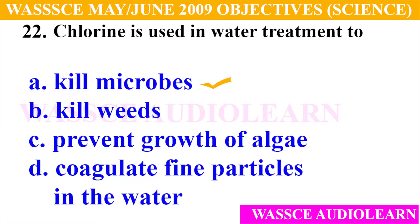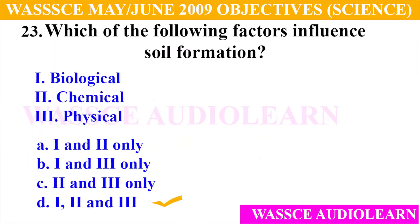Question 22: Chlorine is used in water treatment to — A. Kill microbes, B. Kill weeds, C. Prevent growth of algae, D. Coagulate fine particles in the water. And the answer is A, kill microbes. Chlorine is used in water treatment to kill microbes.